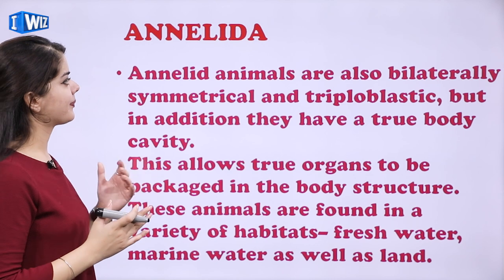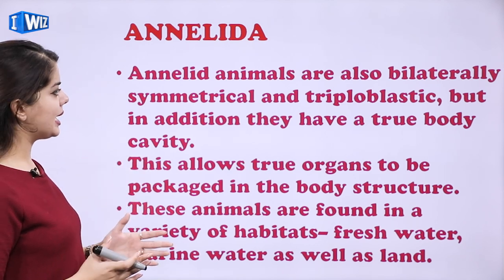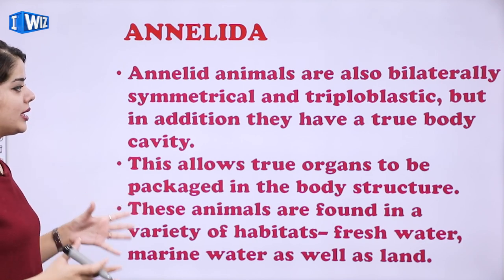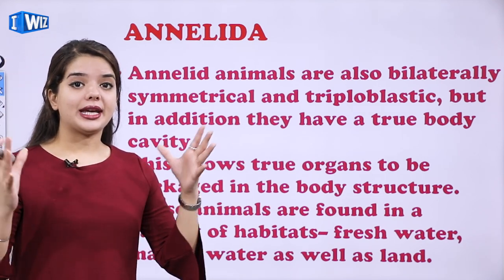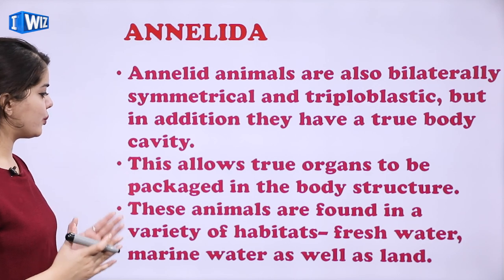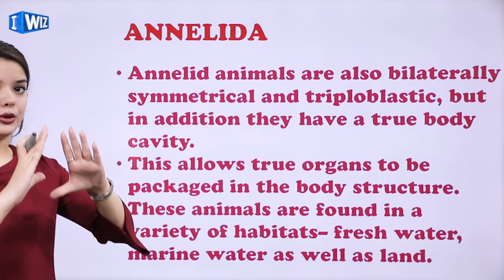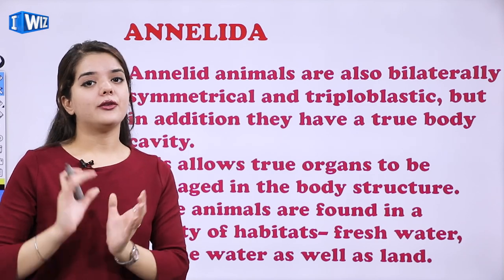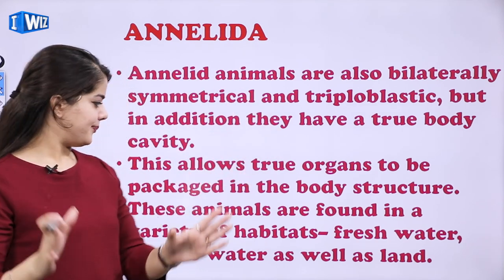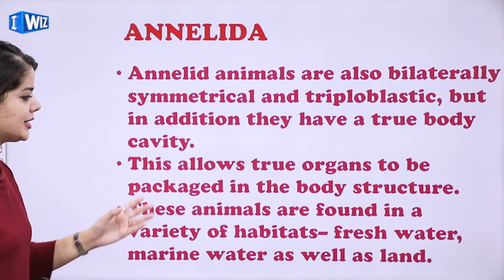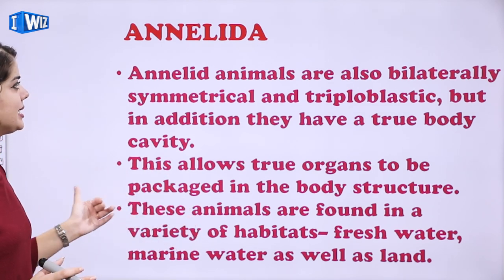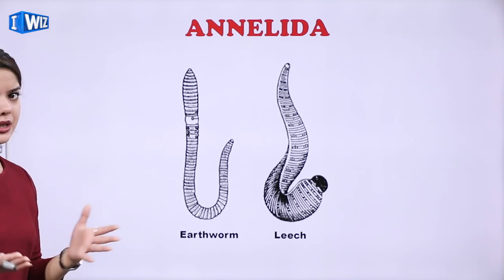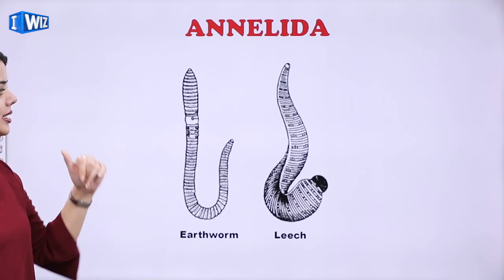Then we have Annelida. Annelida animals are also bilaterally symmetrical and triploblastic, but in addition they have a true body cavity. This allows true organs to be packaged in the body structure — proper organs jo hai wo rahe sakte hai because they have a cavity. These animals are found in a variety of habitats: fresh water, marine water, as well as land. Examples of Annelida are earthworm and leech.